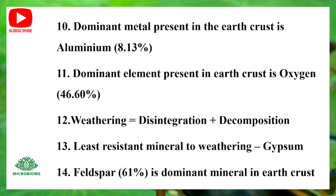The dominant metal present in the earth's crust is Aluminium at 8.13%. The dominant element present in the earth's crust is Oxygen at 46.60%. Weathering is disintegration plus decomposition. The least resistant mineral to weathering is Gypsum. Feldspar at 61% is the dominant mineral in the earth's crust.